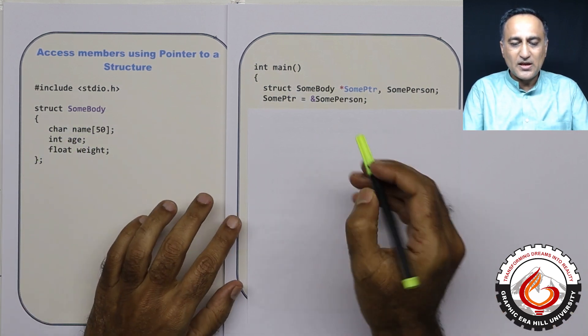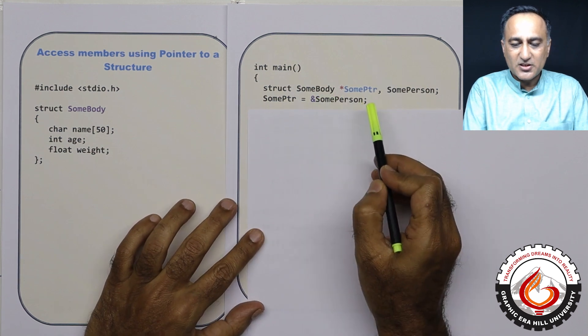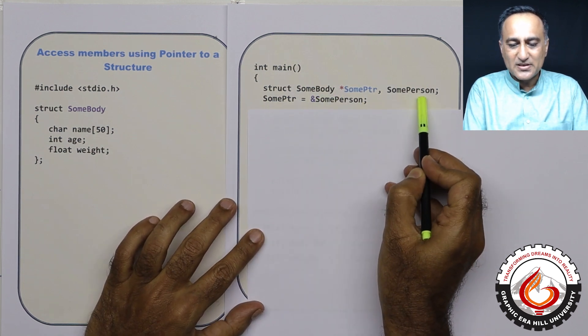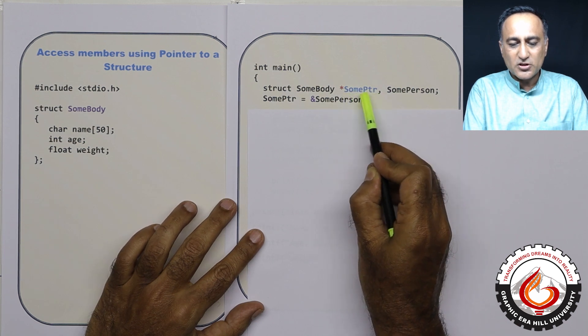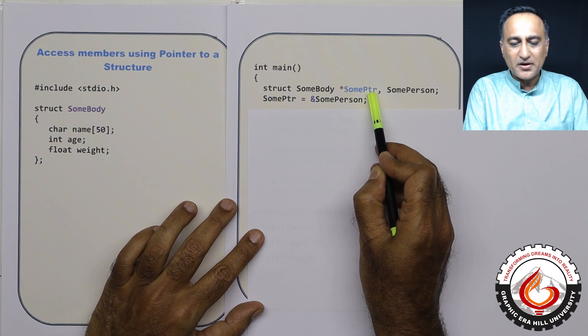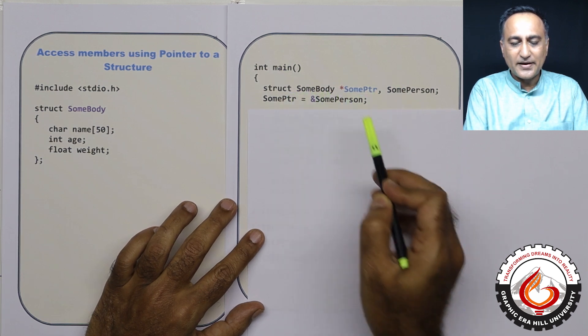Here if you see, I have defined a structure variable called as some person and a pointer to a structure called as star some pointer. So star some pointer is a pointer of this particular type.